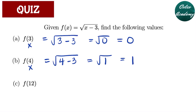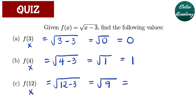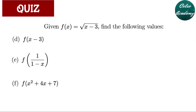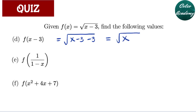For question C, f of 12 means our x value is 12. So we have the square root of 12 minus 3, which is the square root of 9, and the square root of 9 is 3. For question letter D, f of x minus 3 — we substitute x minus 3 into the x, giving us the square root of x minus 3 minus 3. So the answer is the square root of x minus 6, and that's the simplest form.